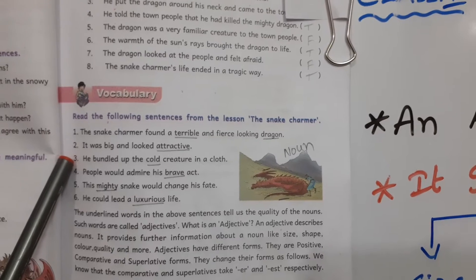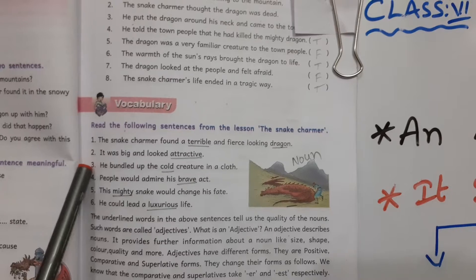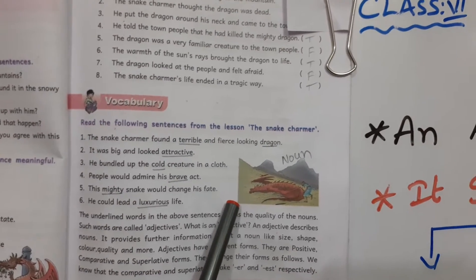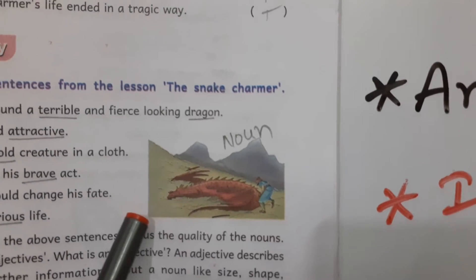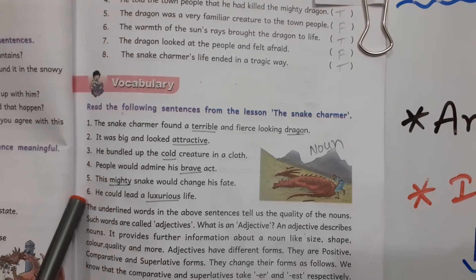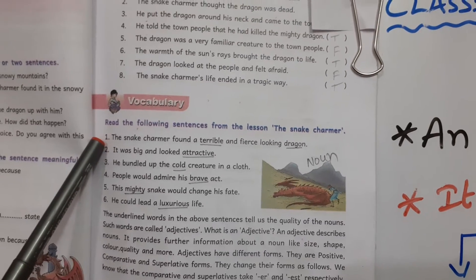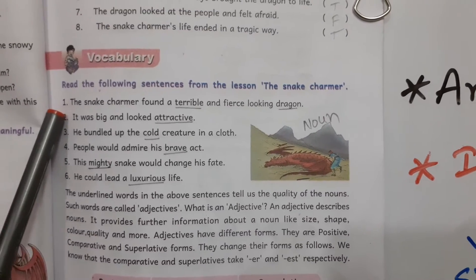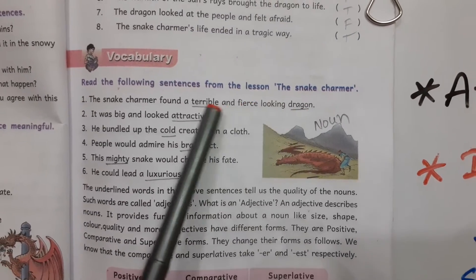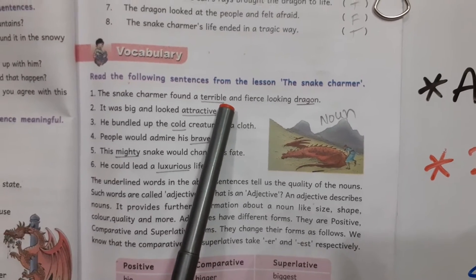We have already known that an adjective describes about nouns. Observe this picture — we are talking about this animal, the dragon. This is the noun here. Here are six sentences about the snake charmer lesson. The snake charmer found a terrible and fierce looking dragon. 'Terrible' is the adjective describing the noun dragon.